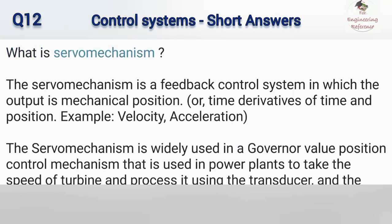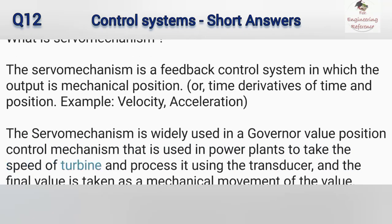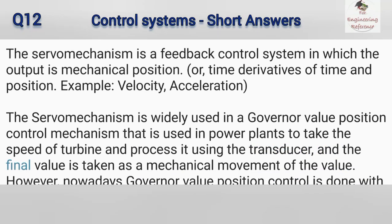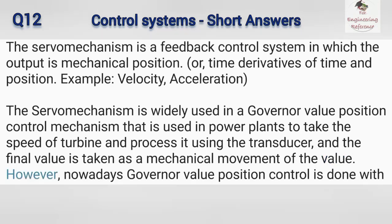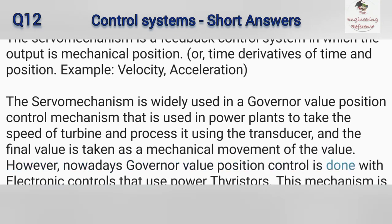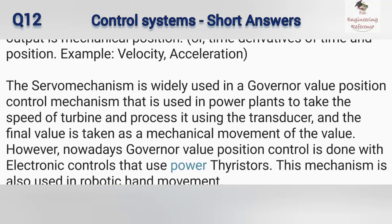What is servo mechanism? The servo mechanism is a feedback control system in which the output is mechanical position, or time derivatives of position such as velocity and acceleration. The servo mechanism is widely used in a governor valve position control mechanism used in power plants to take the speed of a turbine and process it using a transducer, and the final value is taken as a mechanical movement of the valve. Nowadays, governor valve position control is done with electronic controls that use power thyristors.